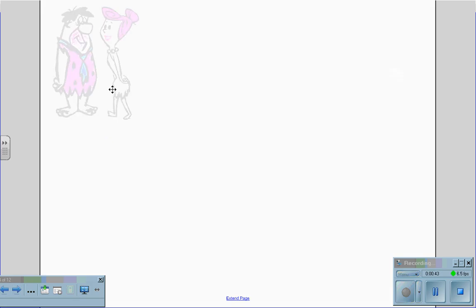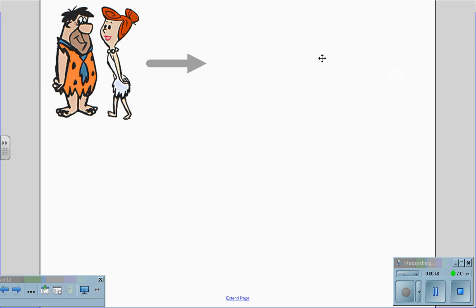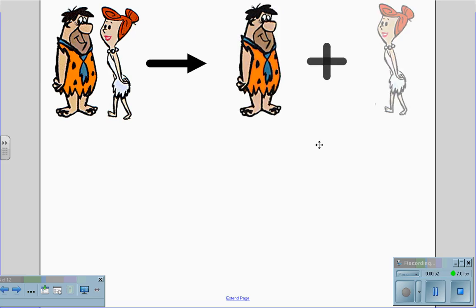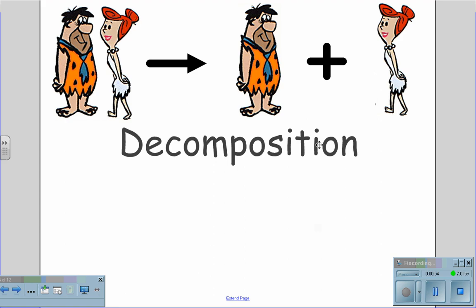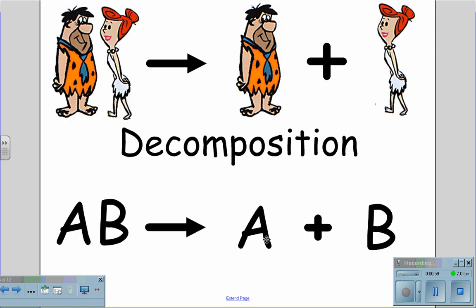If however the Flintstones were together and they got a divorce so that Fred was on his own and Wilma were on her own, then you have decomposition. A compound breaks down into its component parts: AB yields A plus B.